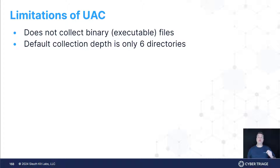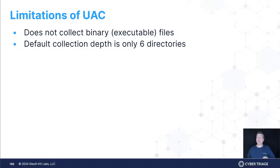The other thing to be aware of is that the default collection depth is only six directories, so that's one configuration you may want to change. Most Linux systems go well beyond six directories, especially if you're dealing with a web server — you can end up with quite deep structures there. UAC does collect and create a body file, getting all file system information off whatever file system you're dealing with. So you do get a full set of timestamps within that body file, which is what CyberTriage uses when presenting your results.